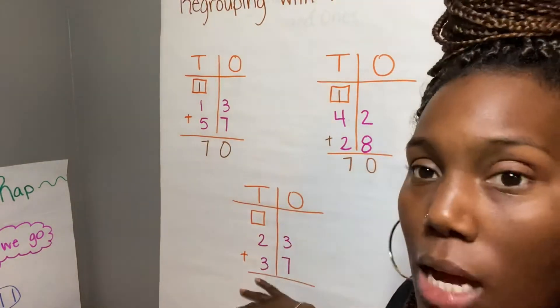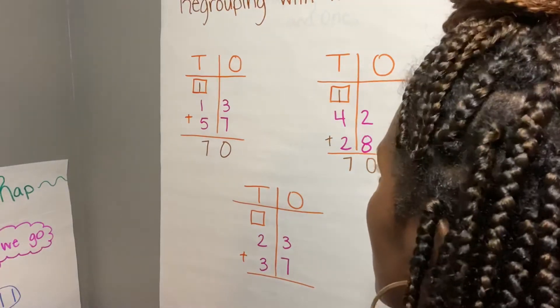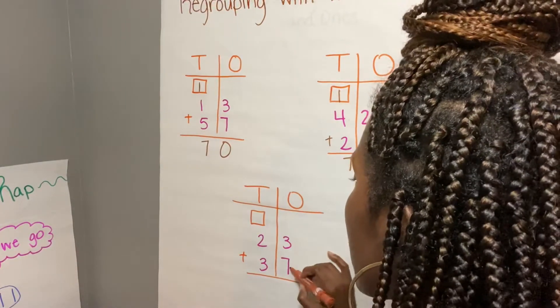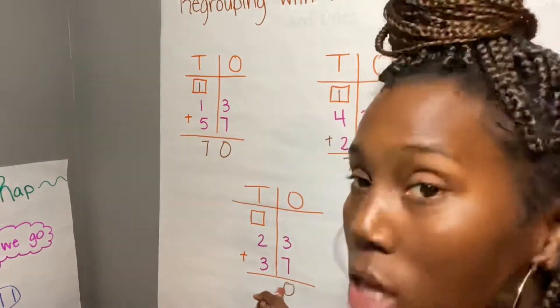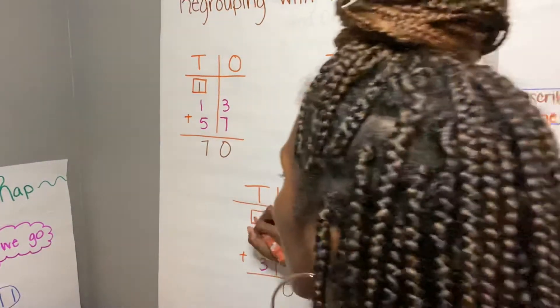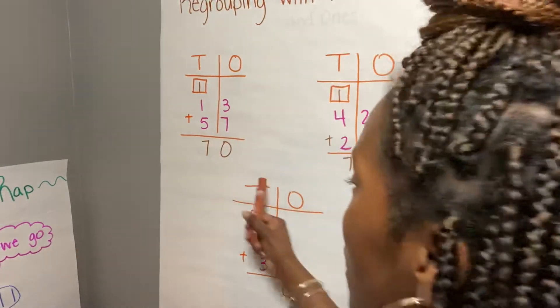Let's see what this one equals out to. So here we go again, we have 3 plus 7, and that equals 10. So we put a 0 that's in our ones place on 10, and our 1 we regroup it with our tens.